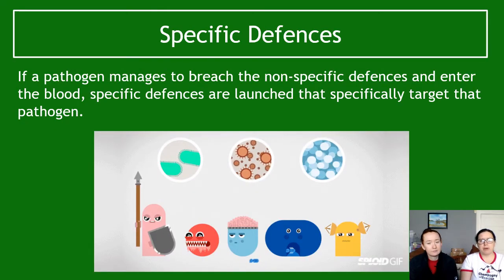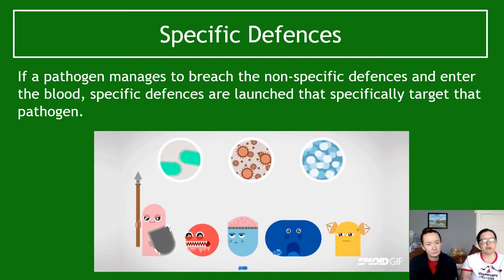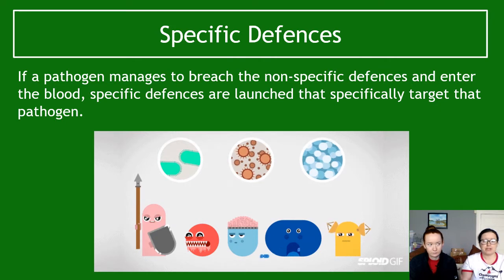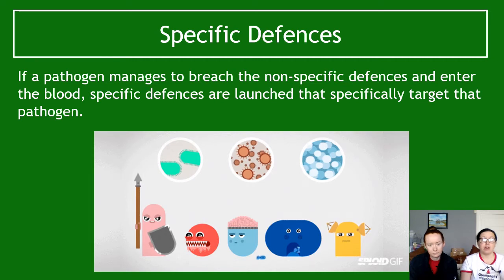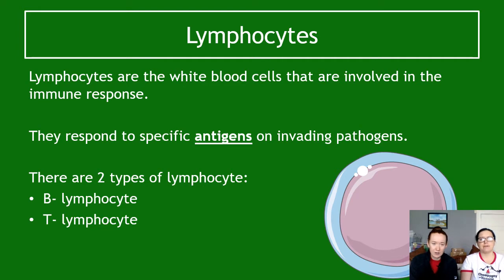If a pathogen manages to breach the non-specific defenses and enter the blood, specific defenses get launched. The non-specific immune system is sometimes very slow — a bacterium can enter the bloodstream, start multiplying and invading tissue, while phagocytes are attacking but just too slow to keep up. Specific defenses can mount a much larger response, and once started they can be rapid and large. Lymphocytes are our specific white blood cells.